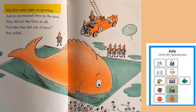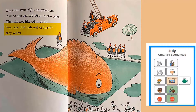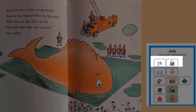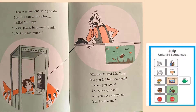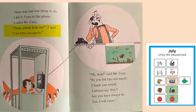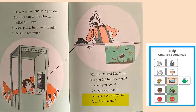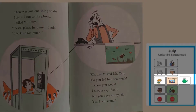But Otto went right on growing, and no one wanted Otto in the pool. They did not like Otto at all. You take that fish out of here! they yelled. All the people are mad that they put Otto in the pool. What should they do now? And will Otto ever stop growing? There was just one thing to do — I ran to the phone. I called Mr. Karp. Please, please help me, I said. I fed Otto too much. Oh dear, said Mr. Karp. So you fed him too much? I knew you would. I always say don't, but you boys always do. Yes, I will come. The boy called Mr. Karp and he said he would come help.